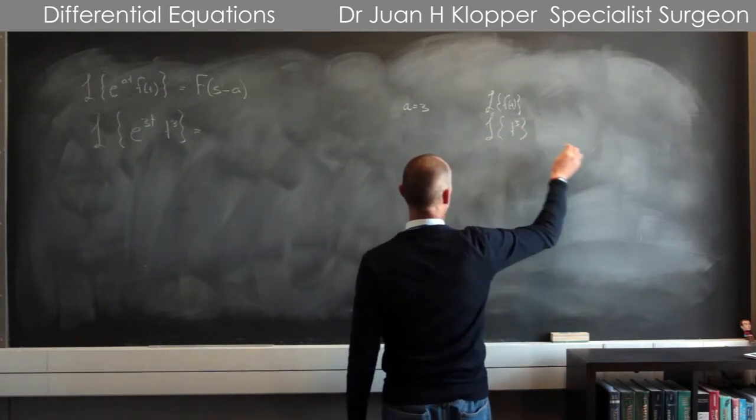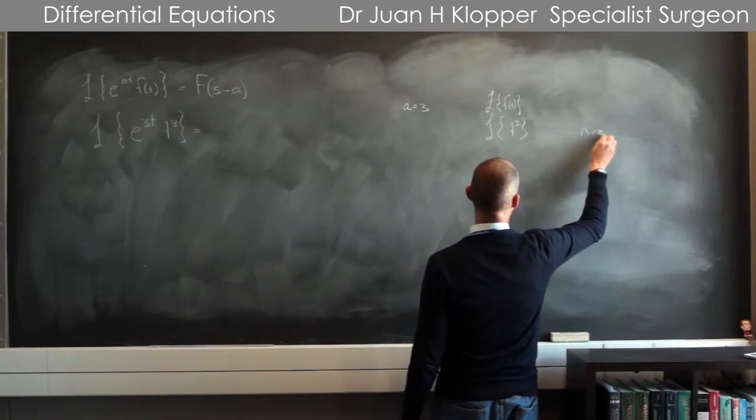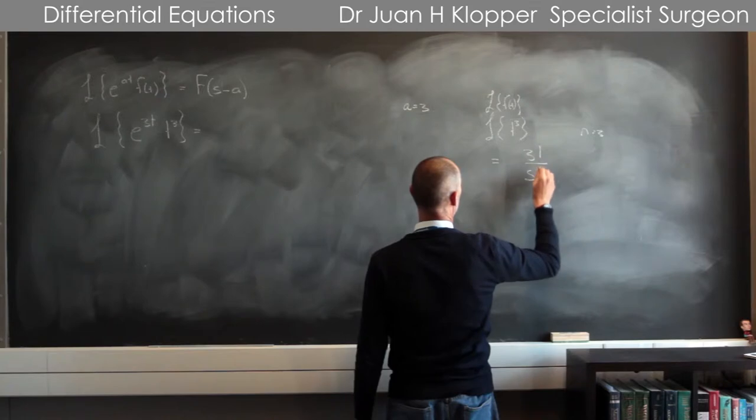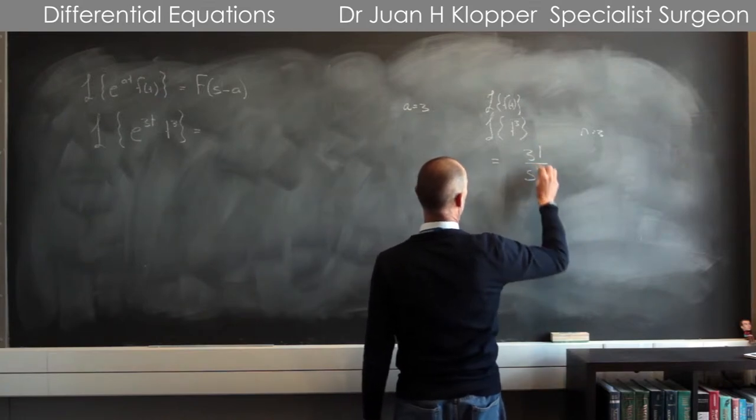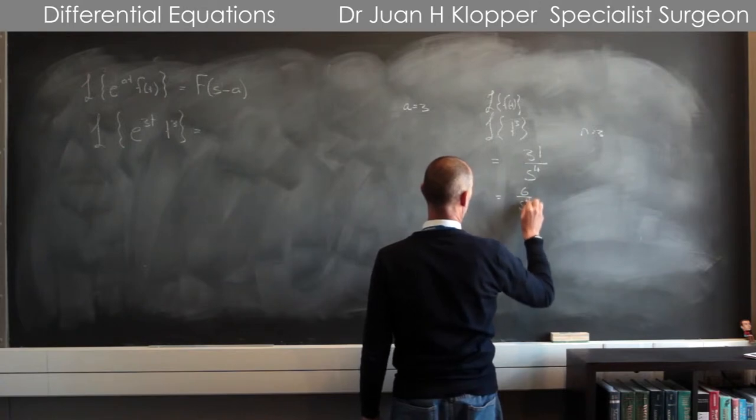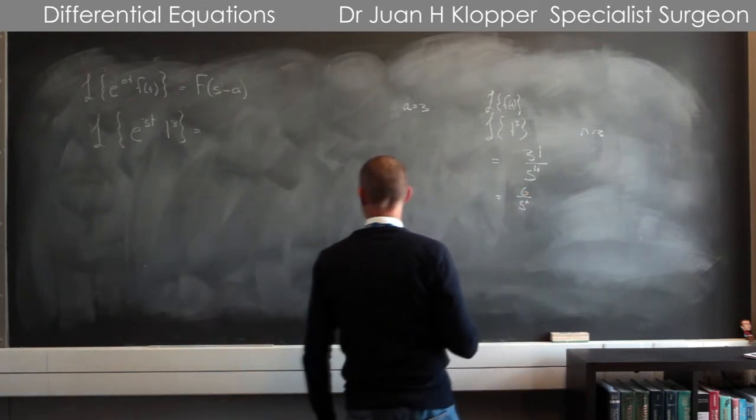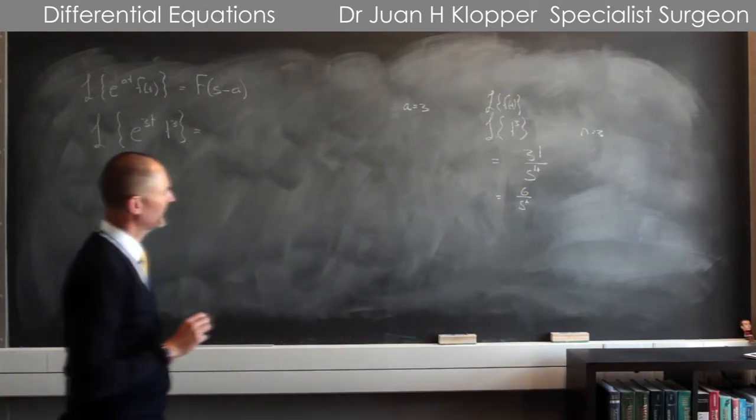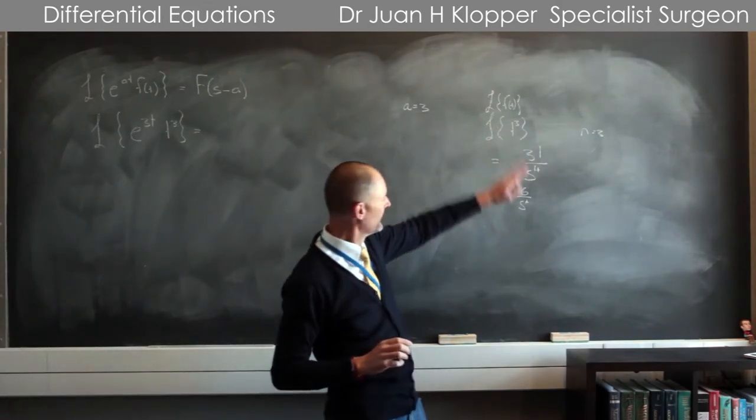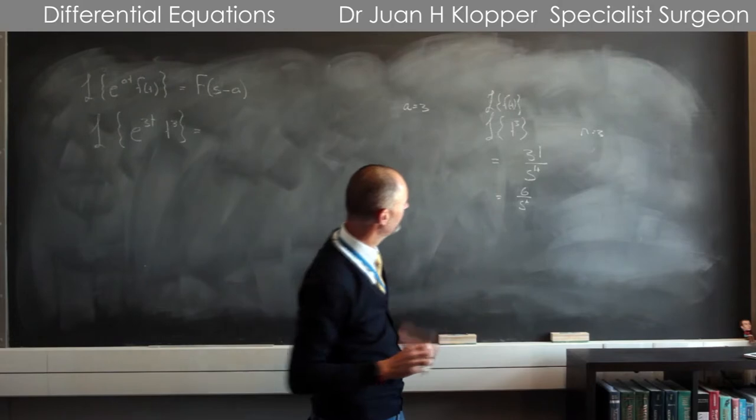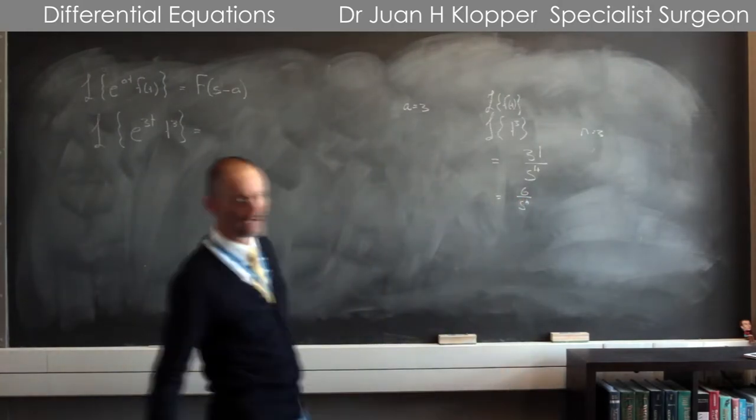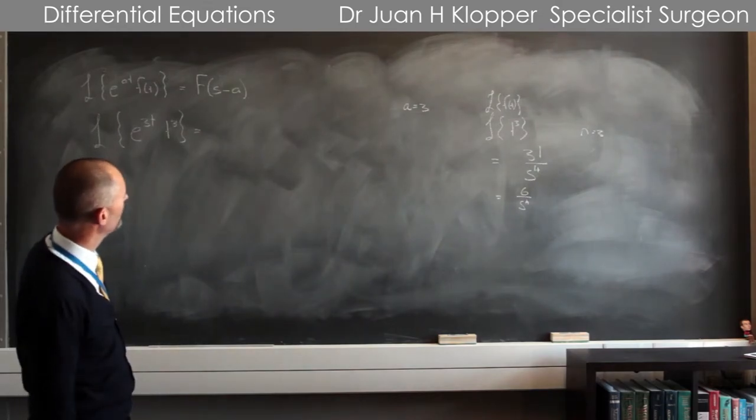And here I have n equals 3, so for me this is going to be 3 factorial divided by s to the power n plus 1, so that's 4, so I'm going to have 6 over s to the power 4. So I have the Laplace transform of the f(t) being 6 over s to the power 4, and I have this a equal to 3.